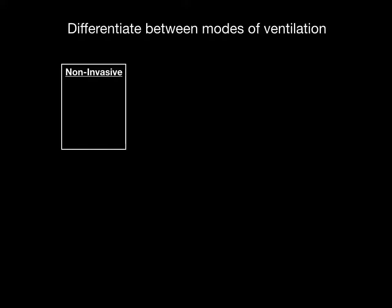Now let's differentiate between the modes of ventilation. I differentiate modes into two basic types: non-invasive and invasive. Within non-invasive, you can have CPAP or BiPAP. In CPAP, you place a mask on a patient's face and deliver a constant pressure, which helps open up the airways. This can be helpful in patients who have obstructive sleep apnea — you stent the upper airway open with that constant pressure. CPAP can also be helpful in patients with underlying lung disease.